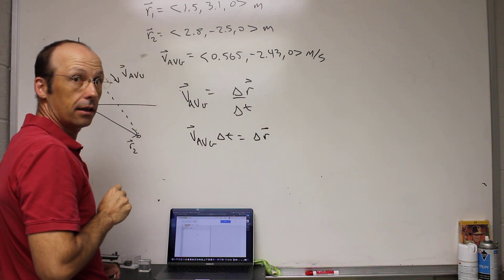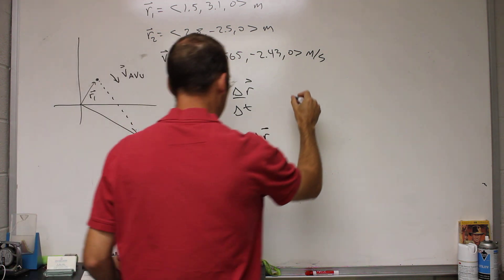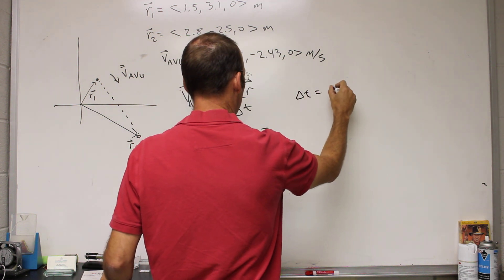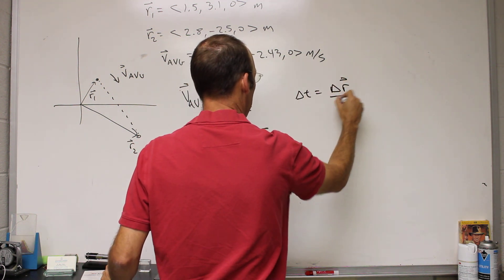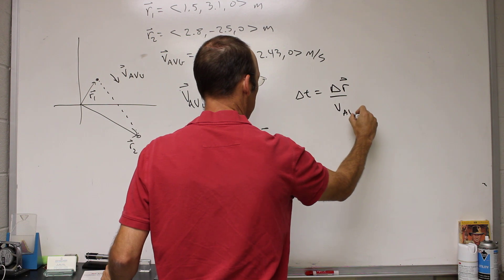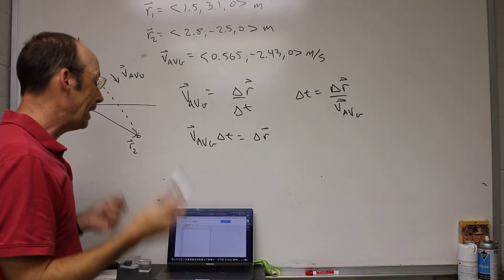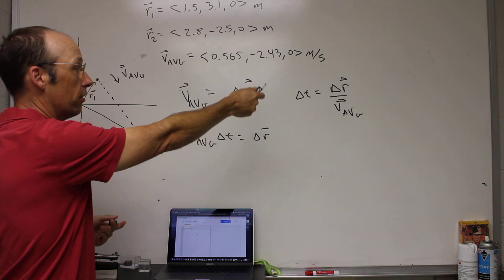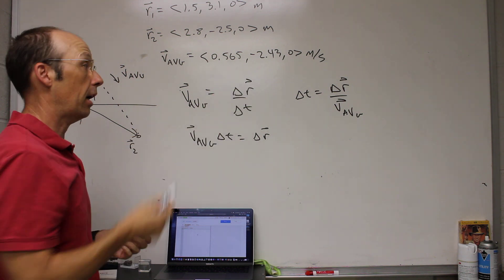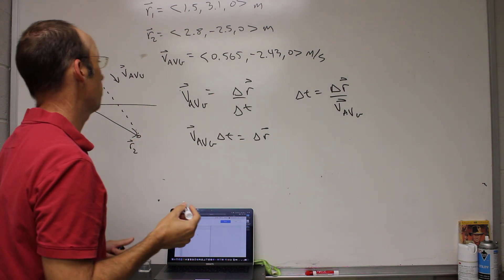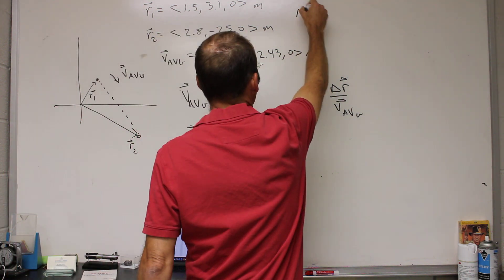And now how do I get delta t? What if I divide both sides? So I say delta t equals delta r over v average. And I can't do that. I can't take a vector and divide by a vector. I could find delta r and actually we should do that. So let's find delta r.